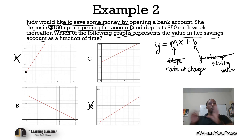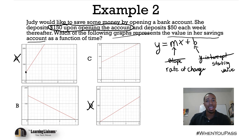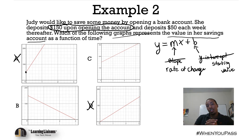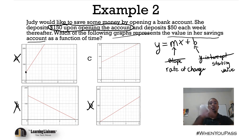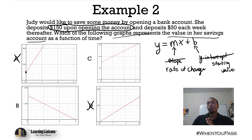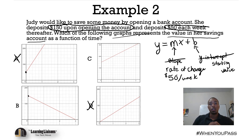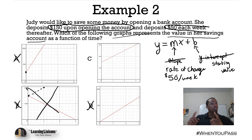There's a clear difference between B and C. Graph B is a descending graph — it's going down. Graph C is an ascending graph — it's going up. If you're putting money into a savings account regularly, would you expect the value to decline? Absolutely not — you'd want it to grow. So B isn't the answer. The rate of change is $50 per week, meaning we add $50 each week. That confirms the answer is C — an ascending graph starting at $150.